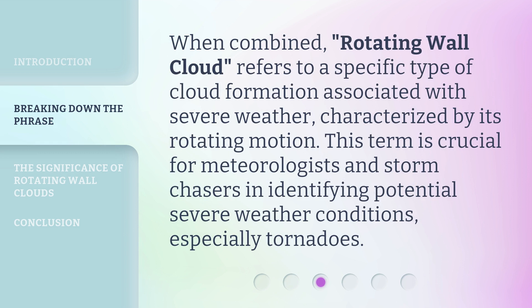When combined, 'rotating wall cloud' refers to a specific type of cloud formation associated with severe weather, characterized by its rotating motion. This term is crucial for meteorologists and storm chasers in identifying potential severe weather conditions, especially tornadoes.